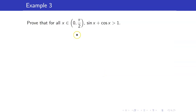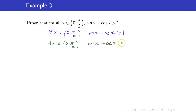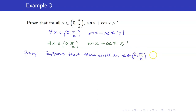For example, we want to prove that for all x in the open interval (0, π/2), sin x + cos x > 1. We will prove this by contradiction. The negation of this statement is: there exists an x in (0, π/2) such that sin x + cos x ≤ 1. So for our proof, suppose there exists an x in this interval such that sin x + cos x ≤ 1. We want to arrive at a contradiction.